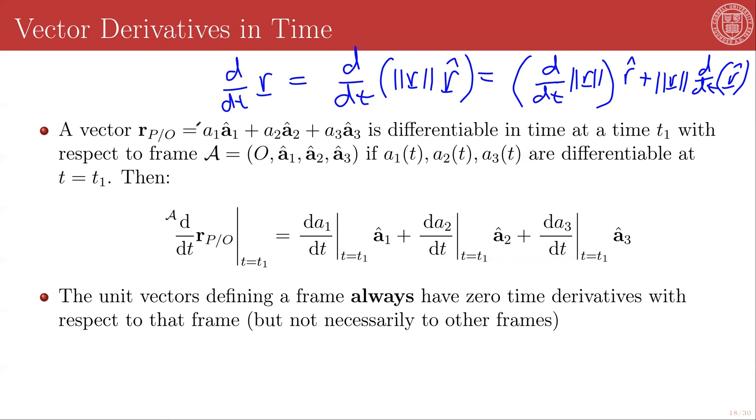So specifically, what is being shown here is that if I have some arbitrary vector written in components of this frame A in the A1, A2, A3 unit directions with measure numbers, then the frame A derivative, which we'll denote by the left superscript on the derivative operator here of this vector at a time T1, will be the three scalar derivatives of those three measure numbers in time in the three unit directions.